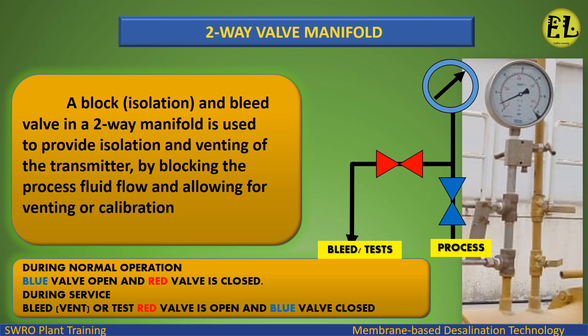A block, isolation, and bleed valve in a two-way manifold is used to provide isolation and venting of the transmitter by blocking the process fluid flow and allowing for venting or calibration. During normal operation, the blue valve is open and the red valve is closed. During service — bleed, vent, or test — the red valve is open and the blue valve is closed.